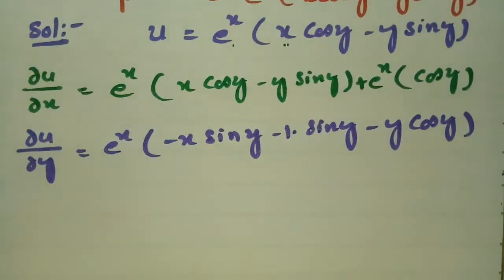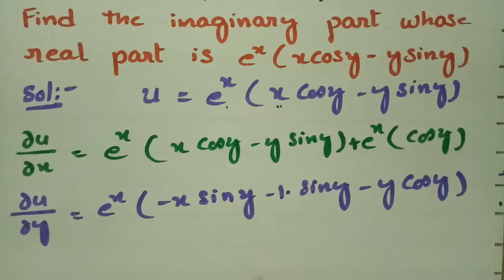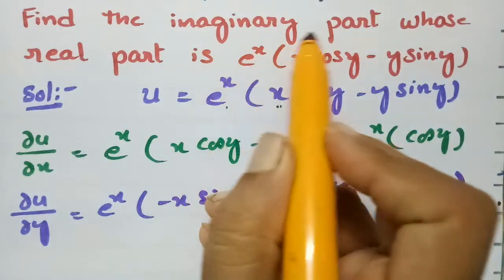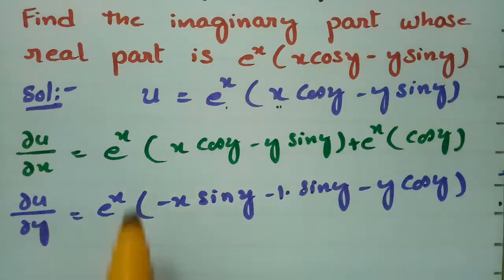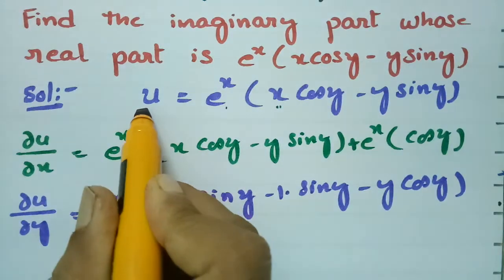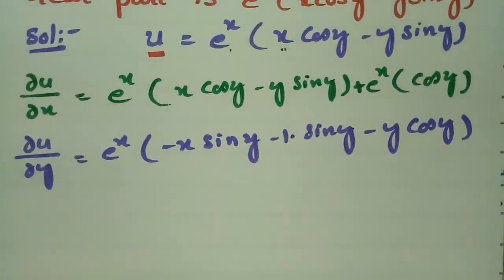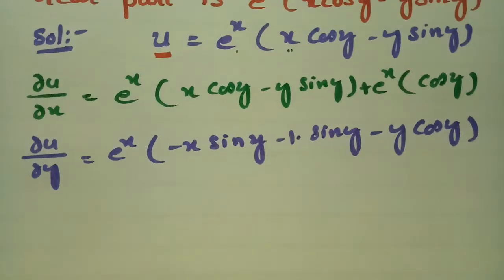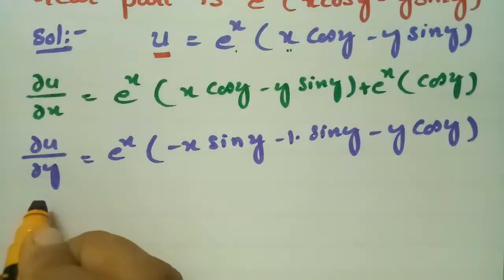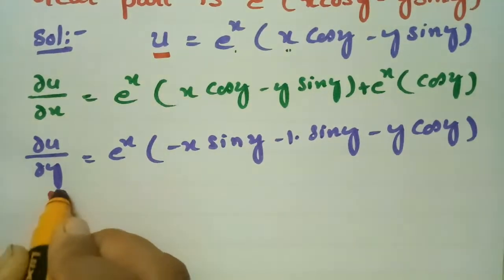So we have computed derivatives with respect to x and with respect to y. In order to find the imaginary part — if u is the real part, v will be the imaginary part — I am using the Milne-Thompson method.